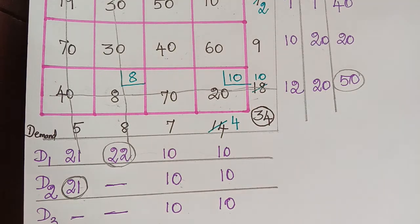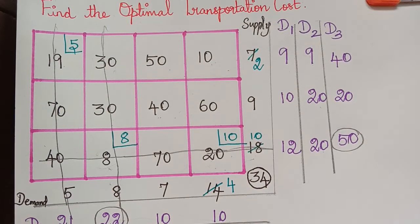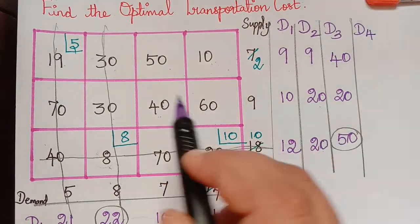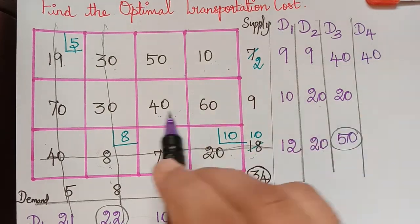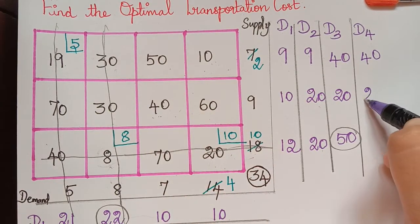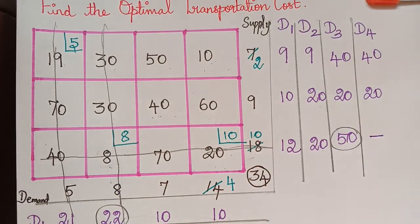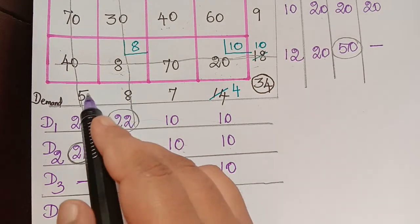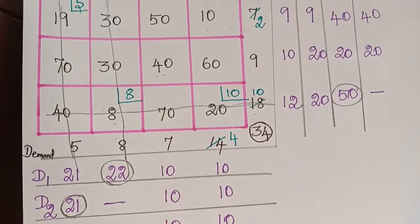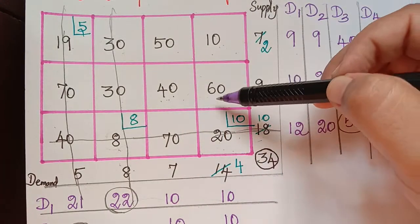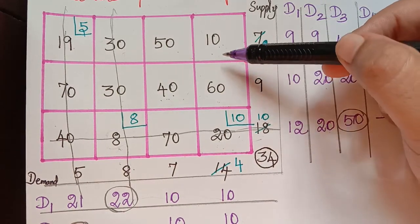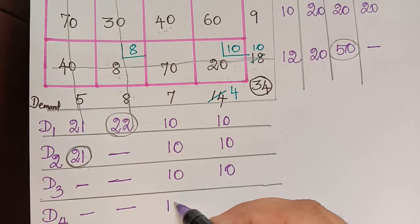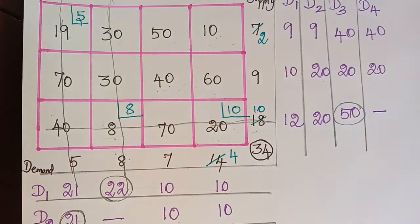For D4, the row differences are: row 1 gives 40 (two left: 50 and 10), row 2 gives 20 (two left: 60 and 40), and row 3 is struck off so hyphenated. For columns: columns 1 and 2 are struck off. Column 3: 50 minus 40 is 10. Column 4: 60 minus 10 is 50.